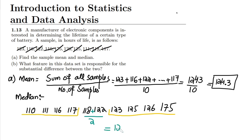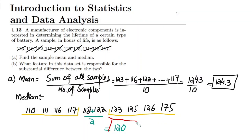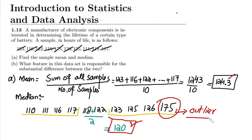So the median of my data is 120. This is the mean and this is the median. In Part B, we are asked: what features in this data set are responsible for the substantial difference between the two? Here we can see that the mean is 124.3 while the median is 120 — a notable difference where these two should be almost equivalent. That is because of the value 175, which is called the outlier.